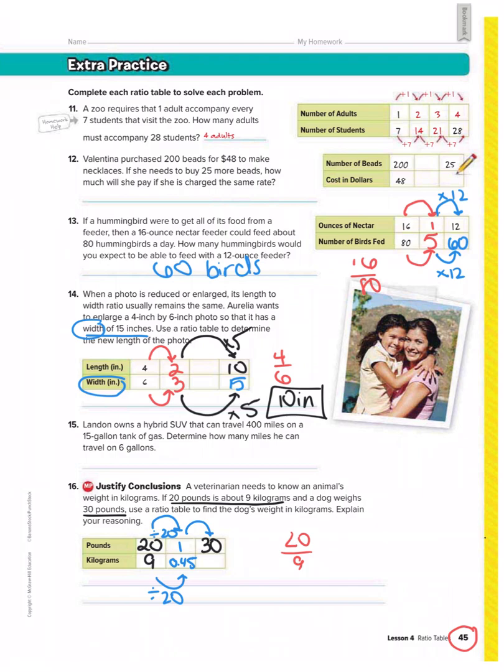Now, because I got a 1 up here, I can use that 1 to get to 30. So that would be times 30. So now I'm going to take 0.45, and I'm also going to times that by 30. And I would get 13.5. So sometimes you get decimals, and that's okay. So a 30-pound dog would be 13.5 kilograms in this problem.